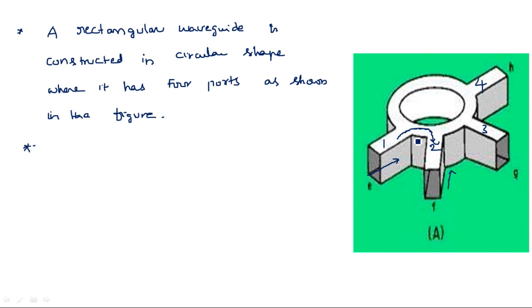Now, what are the reflection coefficients from the other ports, and what are the scattering matrix parameters of this hybrid ring junction or rat race junction? How can we calculate the S-matrix parameters? I will write here a few statements summarizing what I have explained so far.